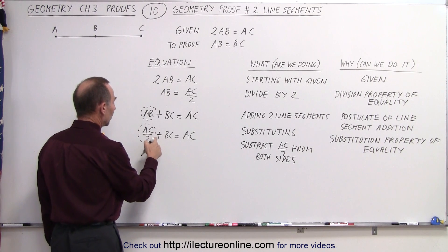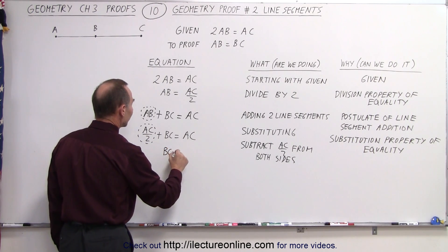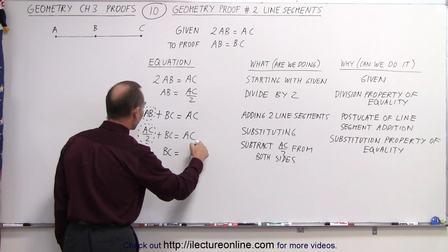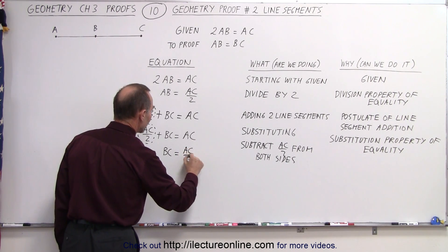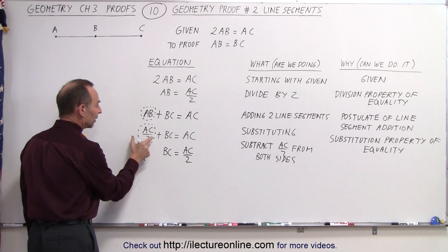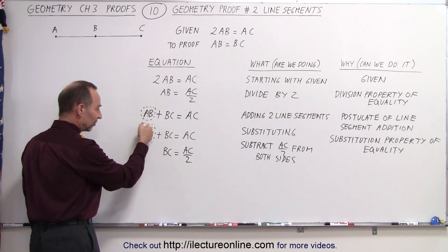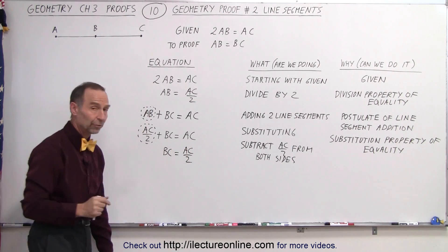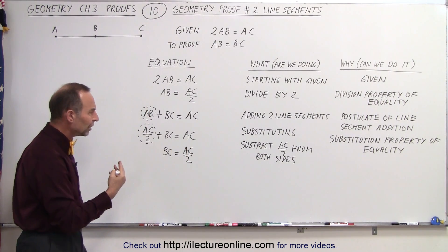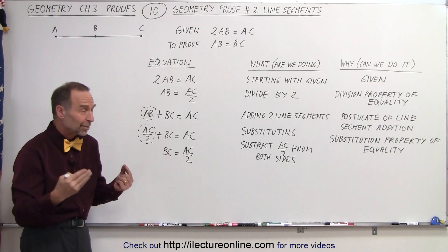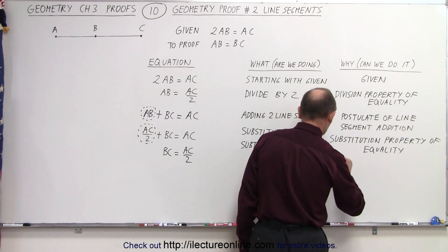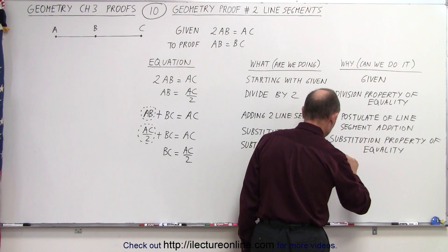When I do that, I end up with simply BC on one side, which is equal to AC minus AC over 2, which is AC divided by 2. If I subtract an AC divided by 2 on the left side, this disappears. If I subtract an AC over 2 from the right side, I end up with just an AC over 2. And why can I do that? Well, since I'm subtracting the same thing from both sides, I can then apply the subtraction property of equality.